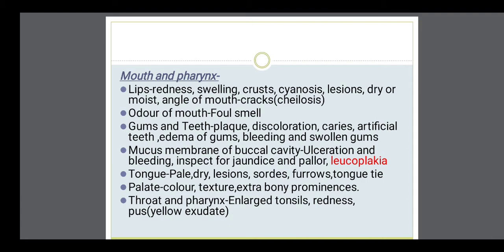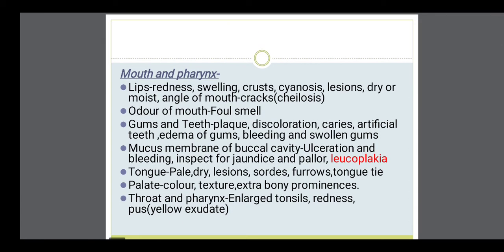When examining the mouth and pharynx, start with the lips: check for redness, swelling, crust, lesions, whether lips are very dry or moist, and whether the angle of the mouth has cracks — cheilosis — which is due to some vitamin deficiency. Then the odor of the mouth — whether there is a foul smell or not. Then gum and teeth conditions: plaque, discoloration, dental caries present or not, artificial teeth, edema of the gums, bleeding, and swollen gums.